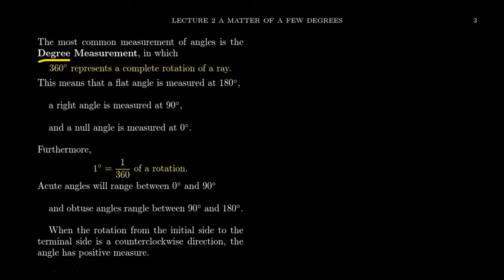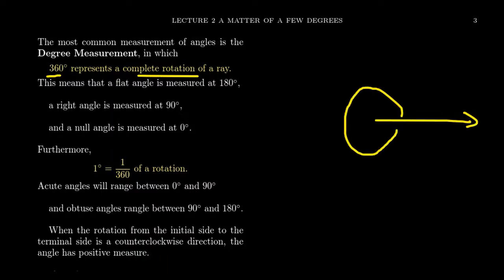At least in the United States, the degree measure is the most common, most comfortable, most natural way to measure angles. But be aware that the choice of 360 degrees is somewhat arbitrary — this is how we define angle measure. A degree is denoted by drawing a little circle as a superscript, the same notation as temperature degrees, although with a different meaning. 360 degrees represents one complete rotation.